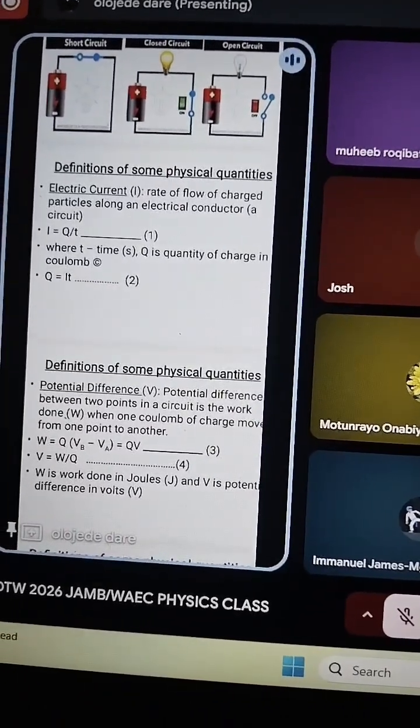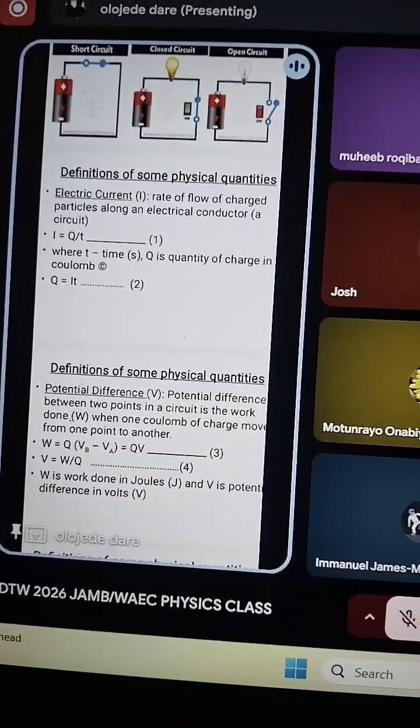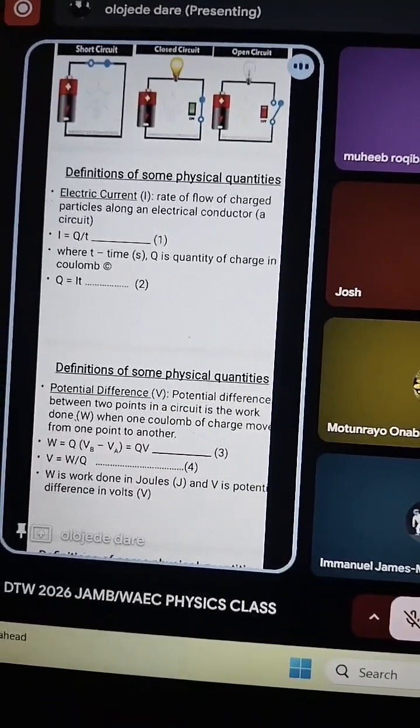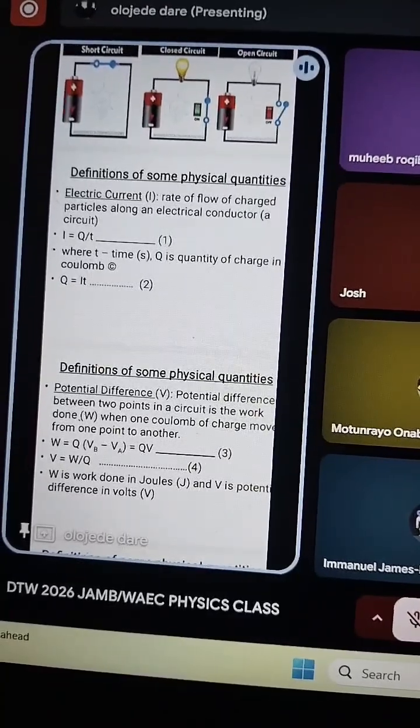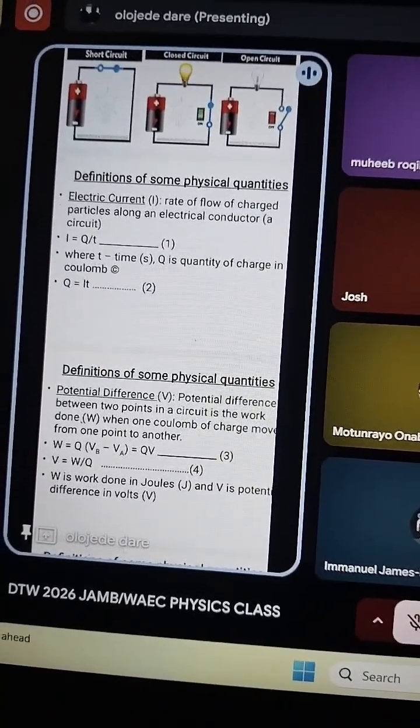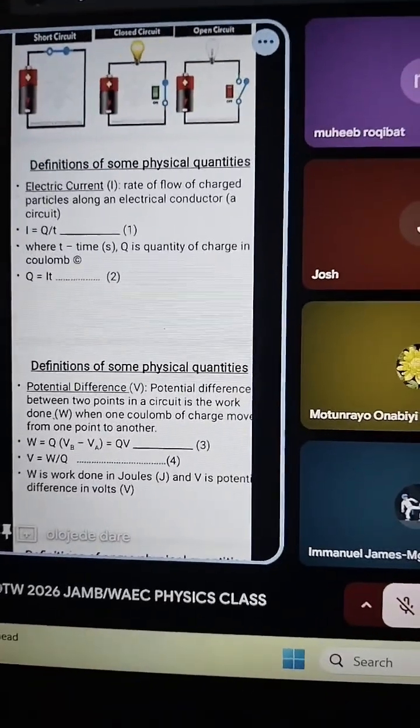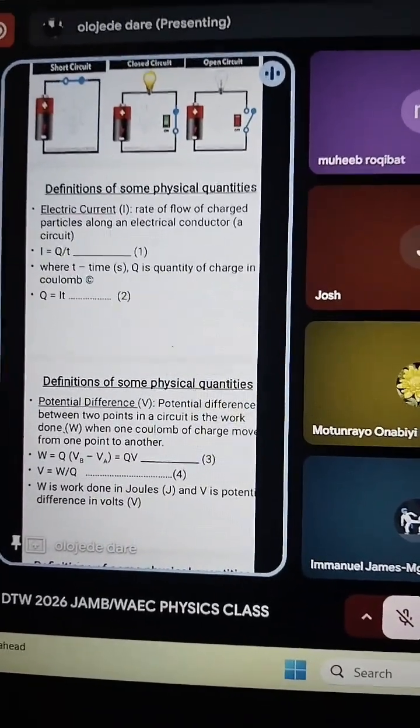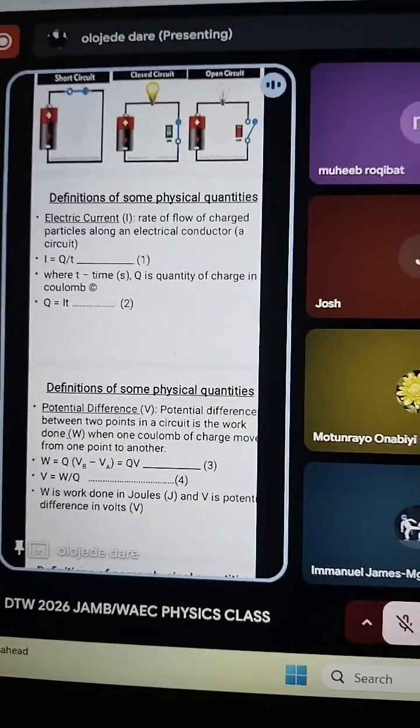So when we say electric current, what are we saying? We are saying what is the rate of flow of charged particles along an electrical conductor? What is the rate of flow? How fast are charges in an electrical conductor flowing? So that tells us the current that is available.